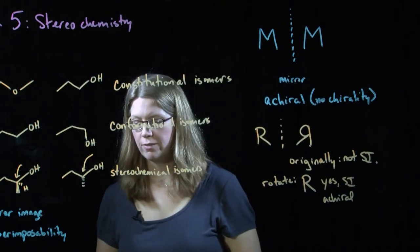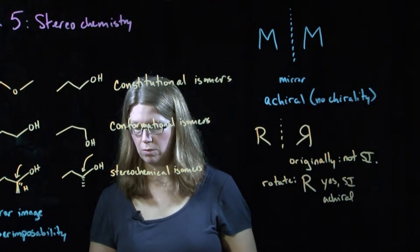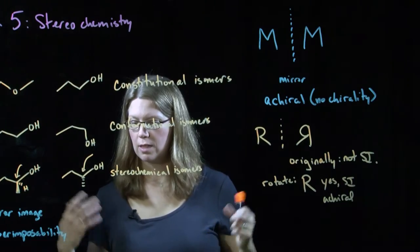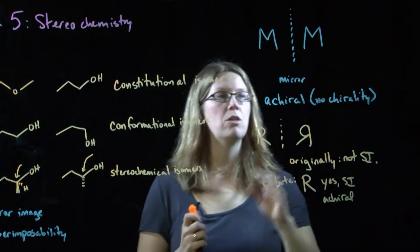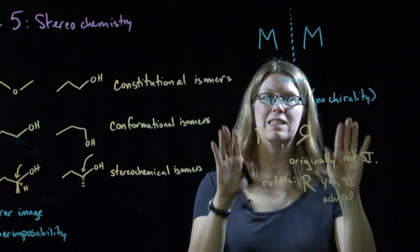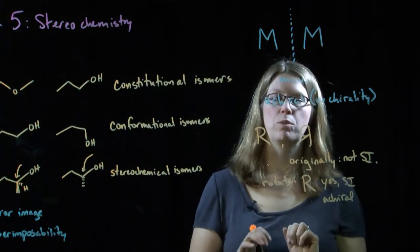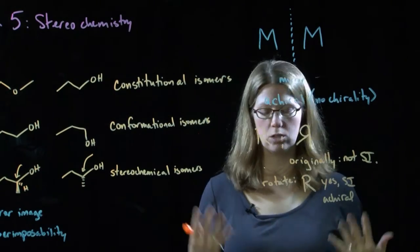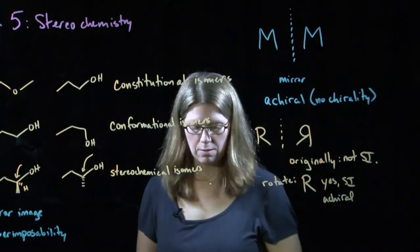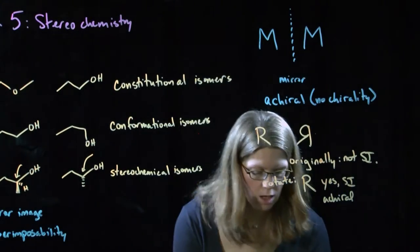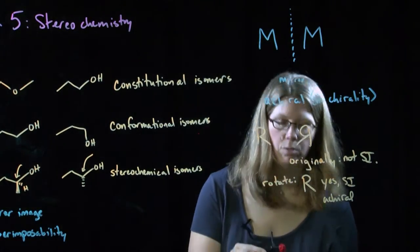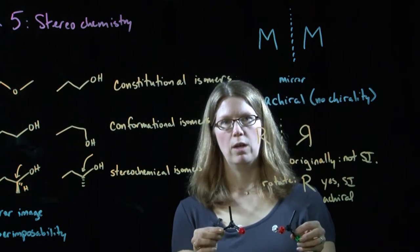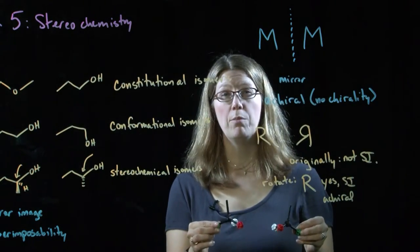As defined on page 52 of your notes, something that is chiral means that its mirror image is not superimposable with itself. So when we look at molecules, we're going to do the same kind of thing. If I had an example of these two molecules, they have the same connectivity.